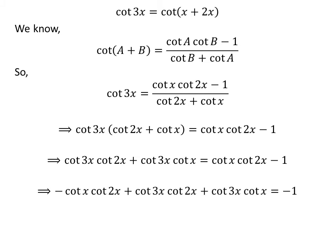Shifting cotangent of x times cotangent of 2x from the right-hand side to the left-hand side gives us: minus cotangent of x times cotangent of 2x plus cotangent of 3x times cotangent of 2x plus cotangent of 3x times cotangent of x is equal to minus 1.